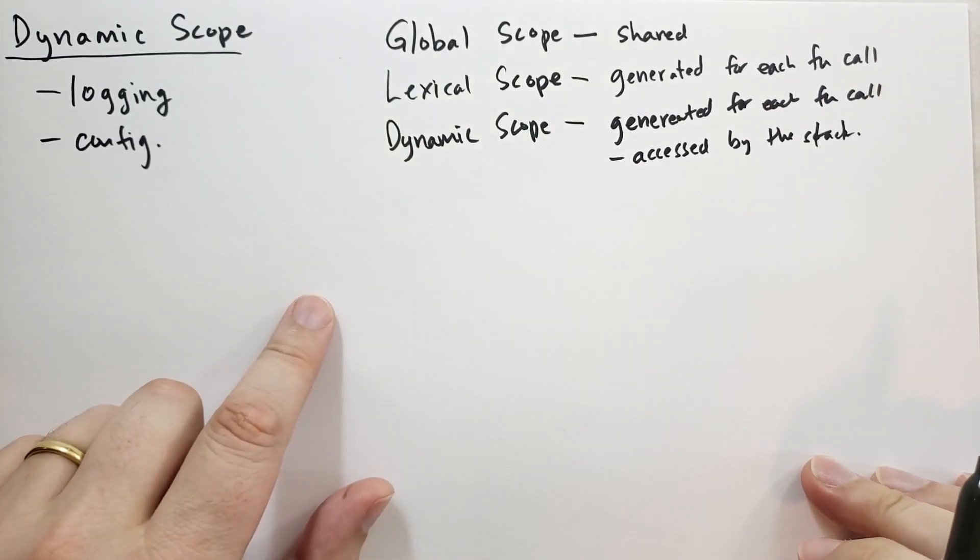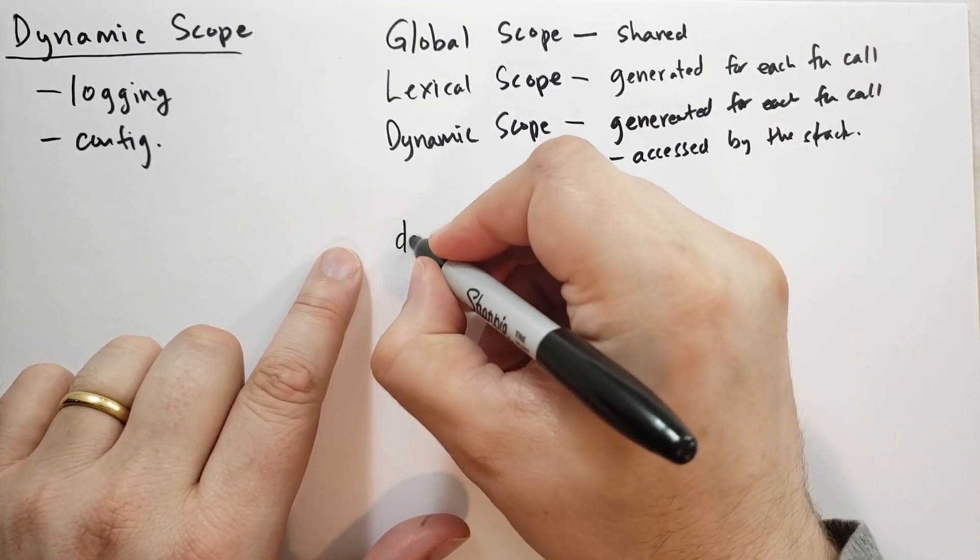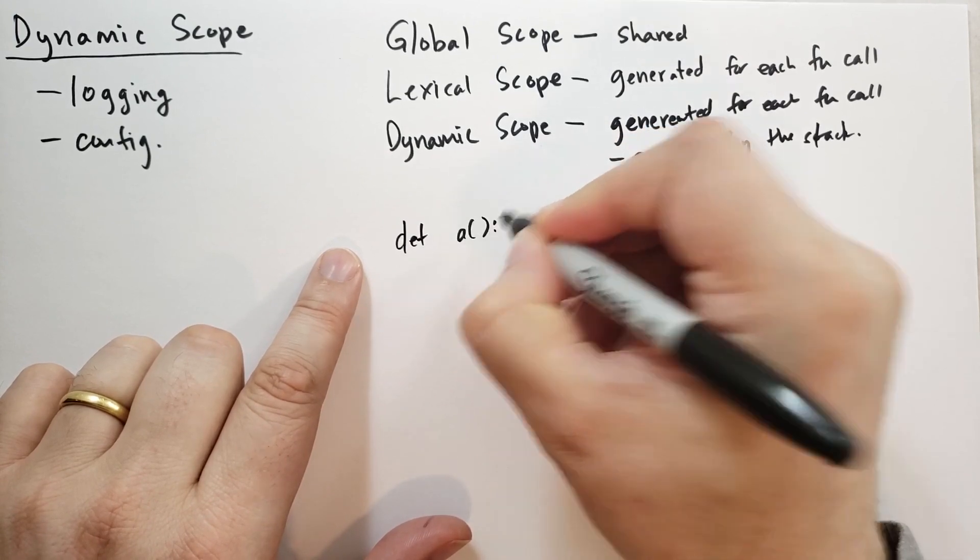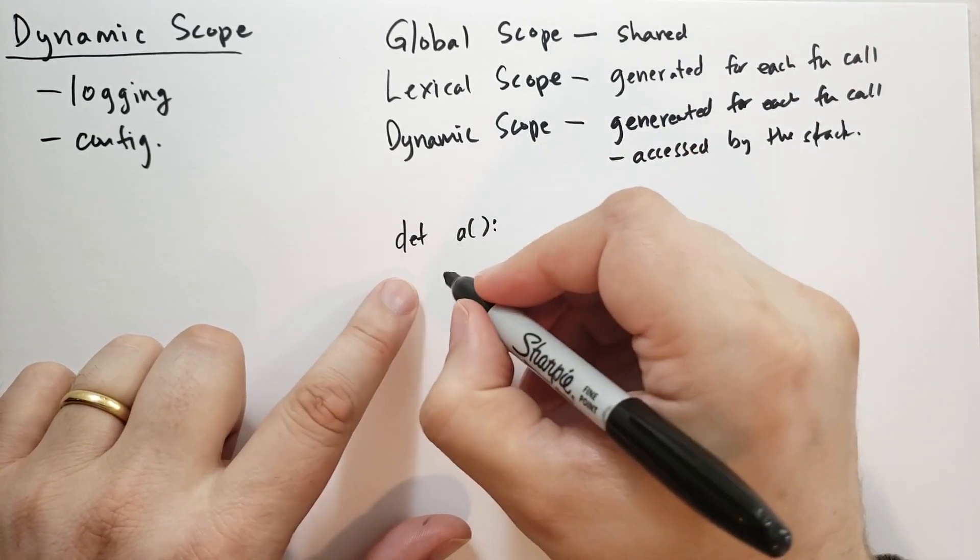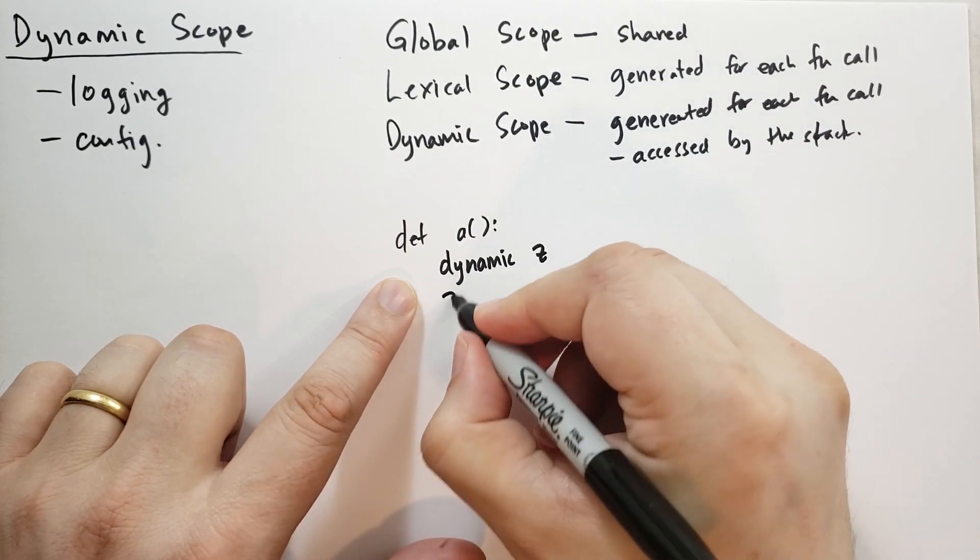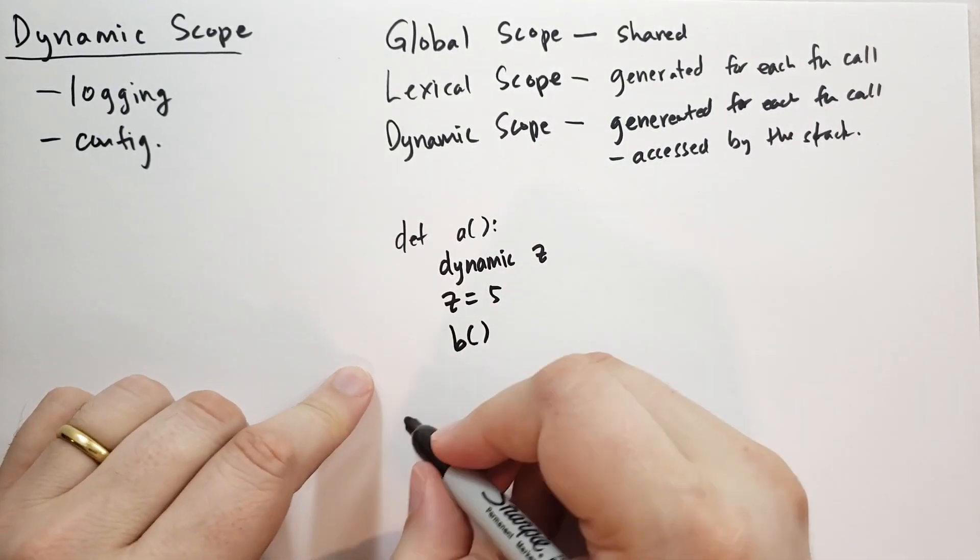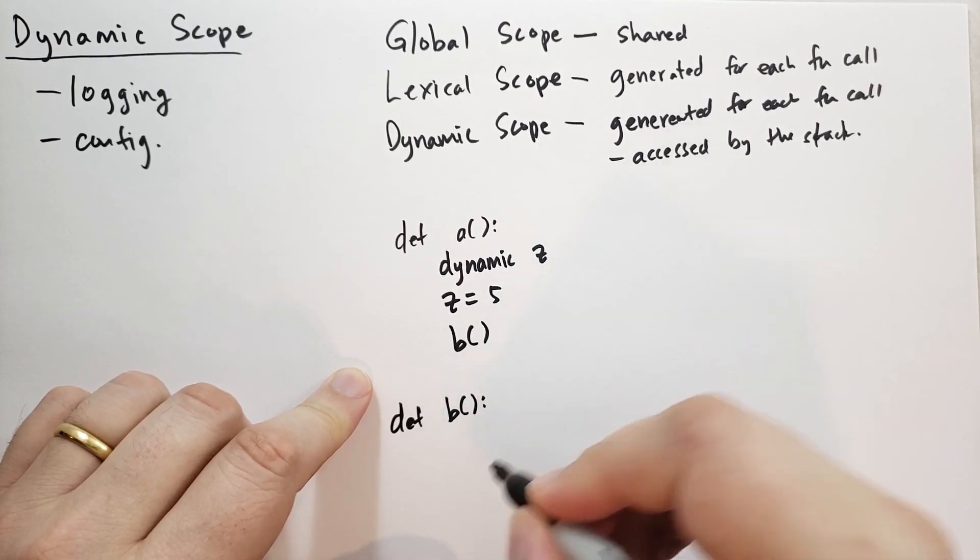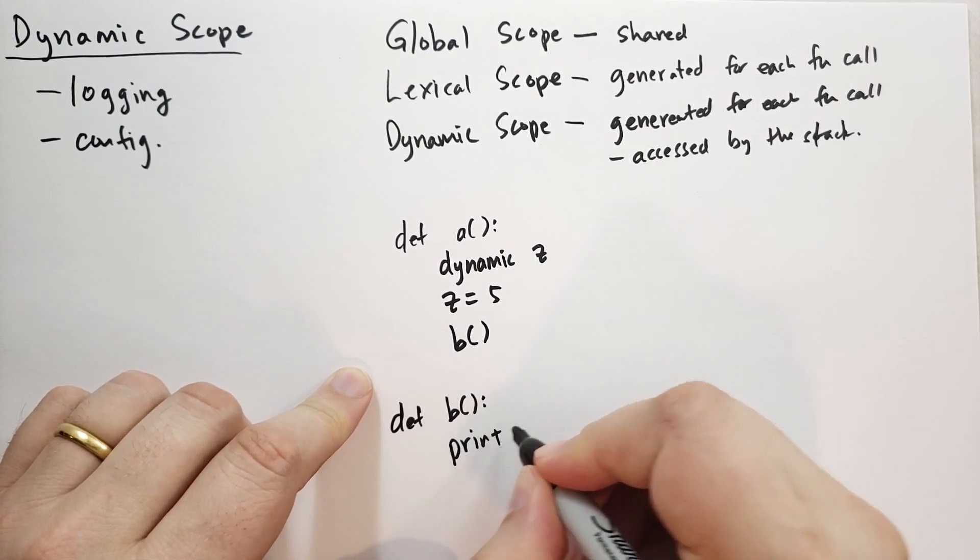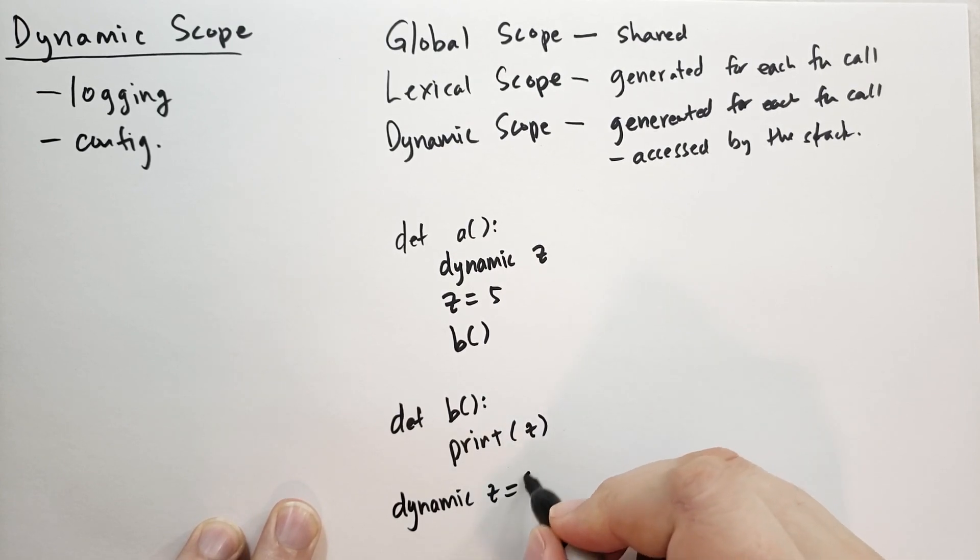Let me give you an example of what dynamic scope might look like in Python if such a feature were ever to be introduced. So you would have a function called a, and this would specify dynamic z and z is equal to five and then it's going to call b. And then b down here is going to print z. And then you specify here, you say dynamic z is equal to six.